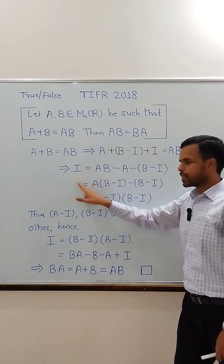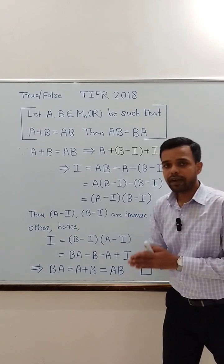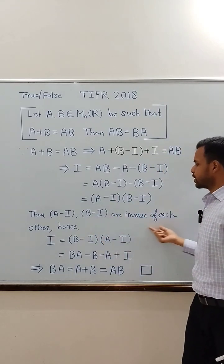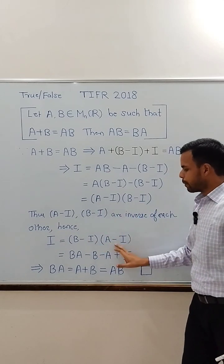Simplifying, we can write identity matrix as (A minus I) times (B minus I). But these two matrices are square matrices of same size so they are inverses of each other. And hence we can write identity matrix as (B minus I) times (A minus I).